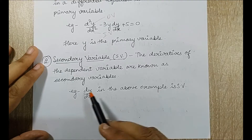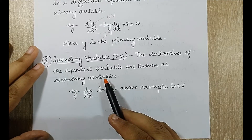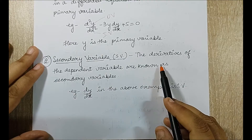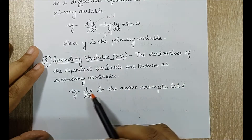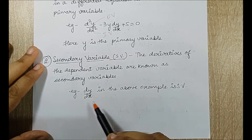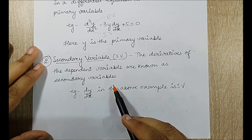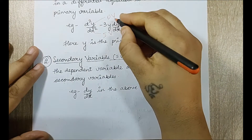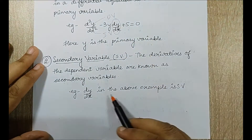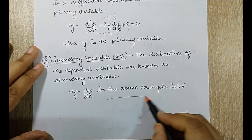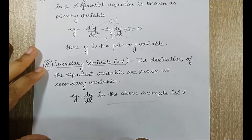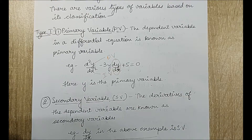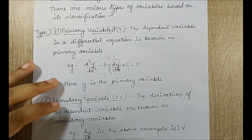There is another term called secondary variable (SV). The derivatives of the dependent variable are known as secondary variables. In the same example, dy/dx, the derivative of the primary variable, is the secondary variable. This is one of the ways variables are classified.